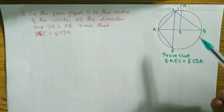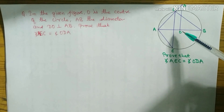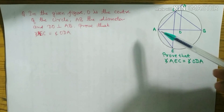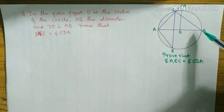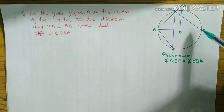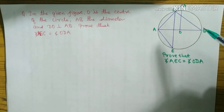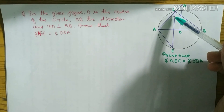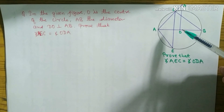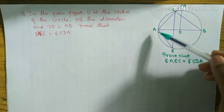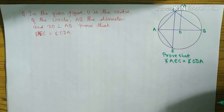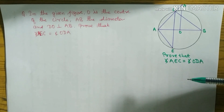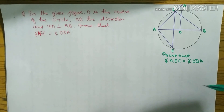In the given figure, O is the center of the circle, as you can see in the diagram. AB is the diameter, and DO is perpendicular to AB. We have to prove that angle ACE is equal to angle ODA.